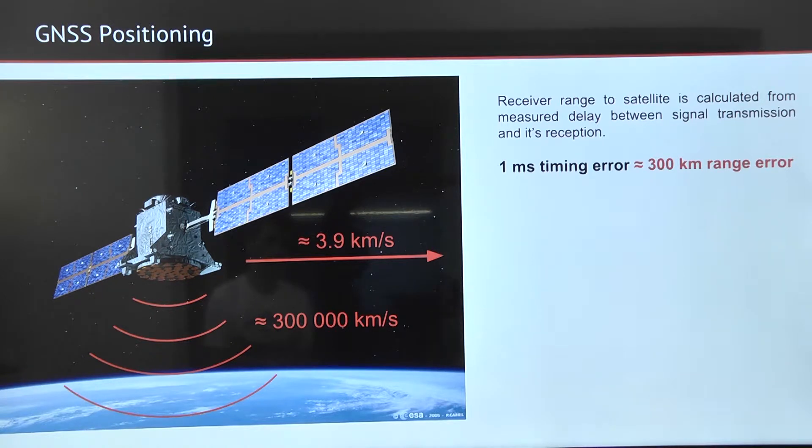Because of the speed of light, one millisecond of timing error would bring a 300 km range error.